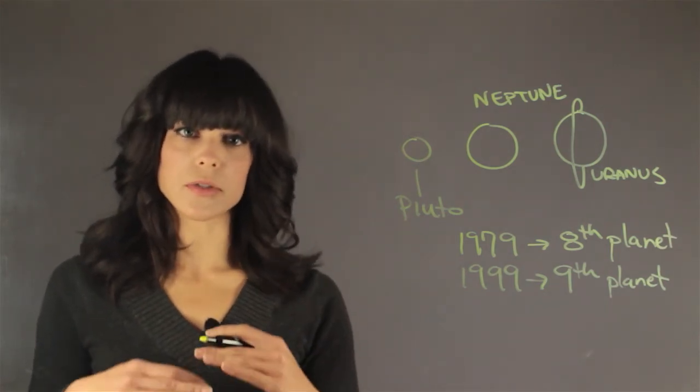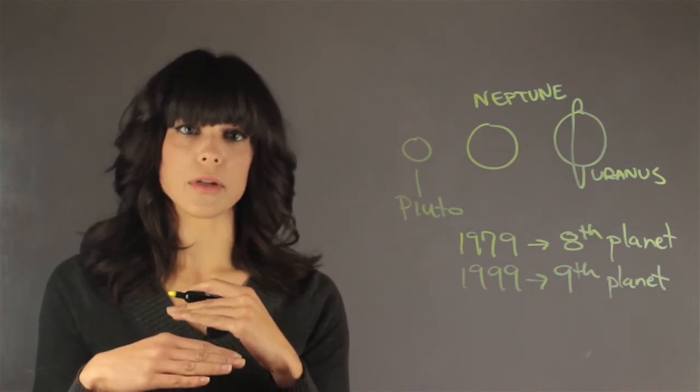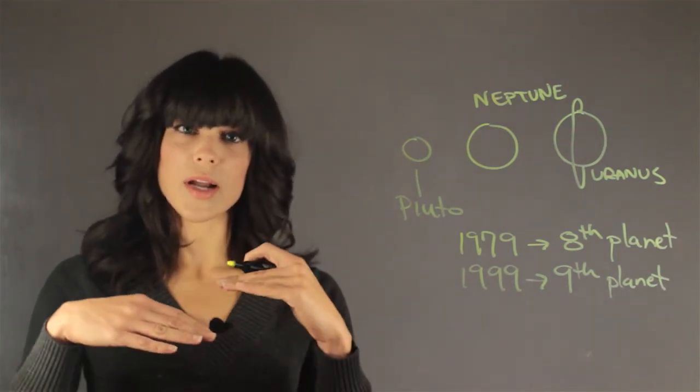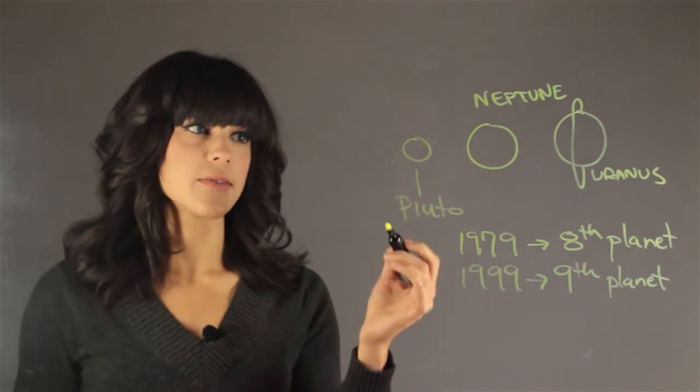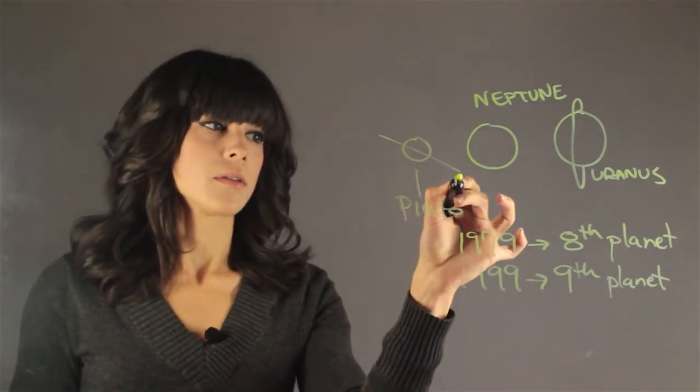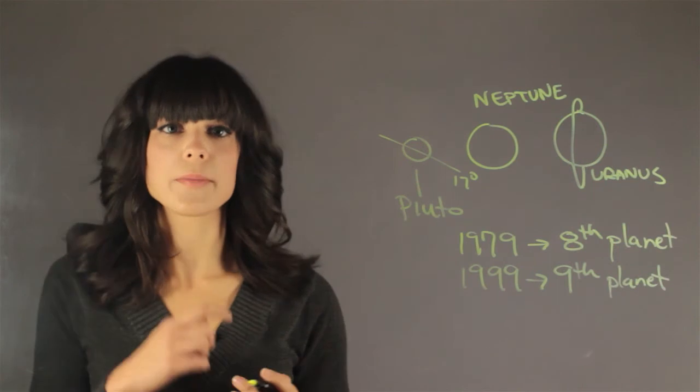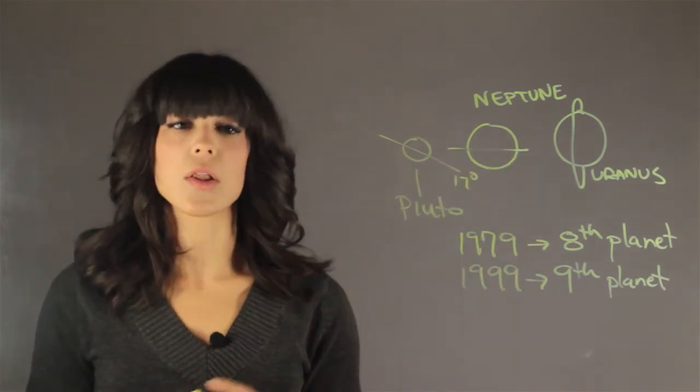Pluto's orbit is actually not perfectly aligned with Neptune's, so their actual paths will never cross. Pluto's inclined by 17 degrees, while Neptune's isn't. Neptune's is along the orbital path.